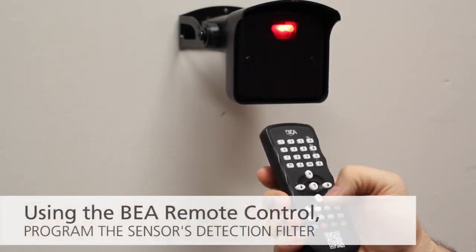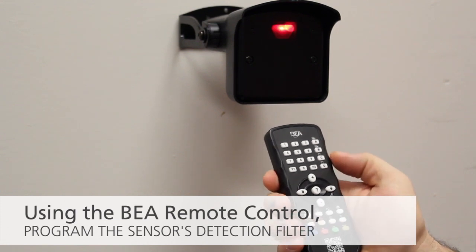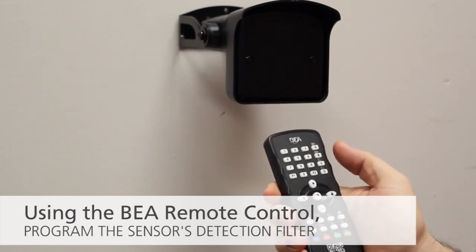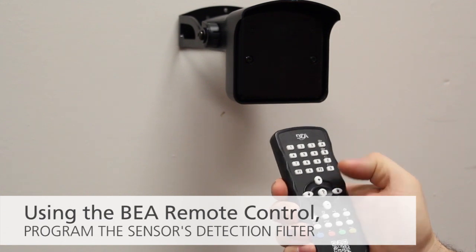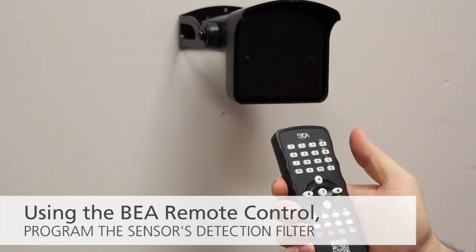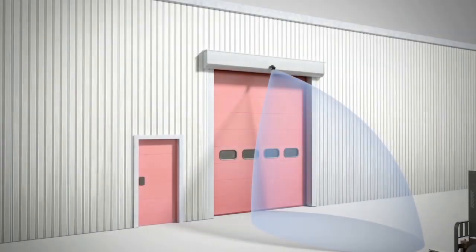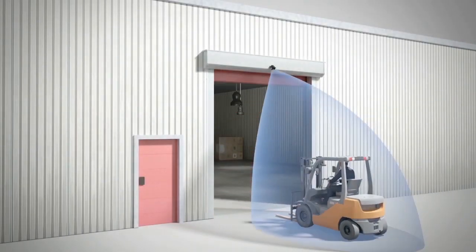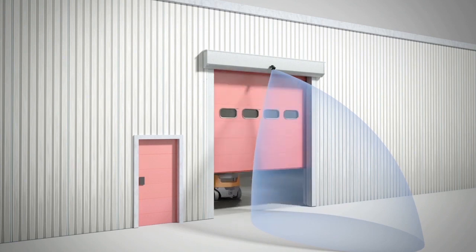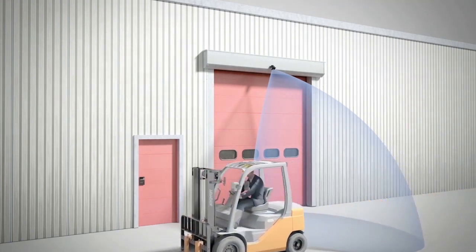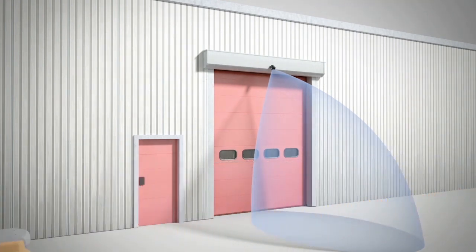Using the BEA remote control, program the sensor's rejection mode to fit the application. If a BEA remote control is not available, consult the BEA Falcon Family User's Guide for push button programming instructions. If detection of all traffic including pedestrian and cross traffic is desired, use settings 1 or 2. If pedestrian and cross traffic rejection are desired, settings 3 through 6 are recommended based on tilt angle and mounting height.